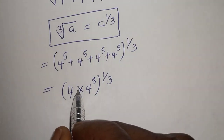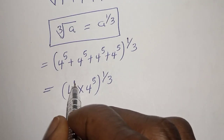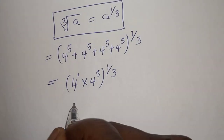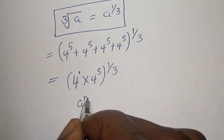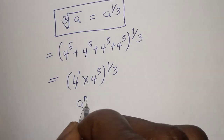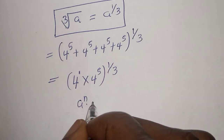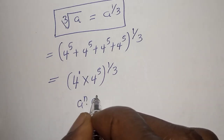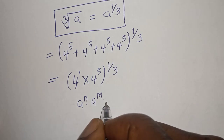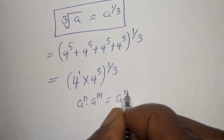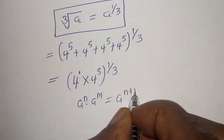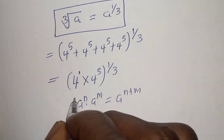We have the same base — this is also to the power of 1. And if you have a raised to power n multiplied by a raised to power m, this is equal to a raised to power n plus m.